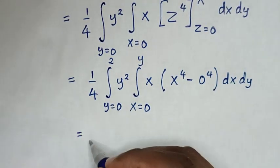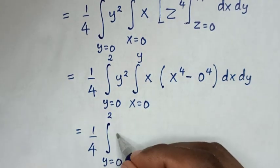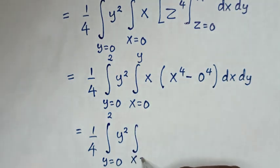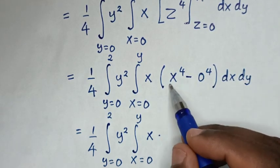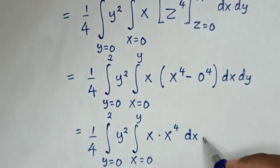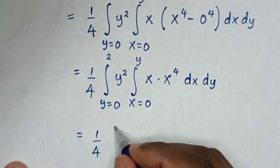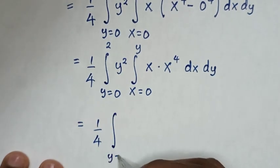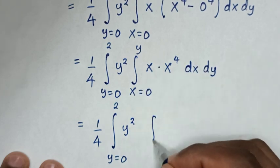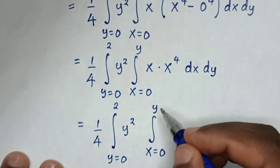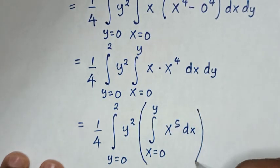Then the next step: it will be equal to 1/4, then integral from y equals 0 up to 2, y², then integral from x equals 0 up to y, x times x⁴. Since 0⁴ is 0, we have x · x⁴ = x⁵, then dx dy.